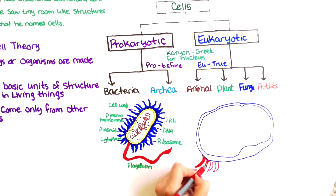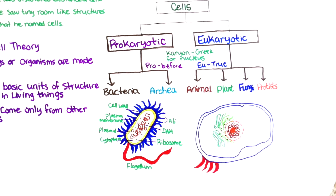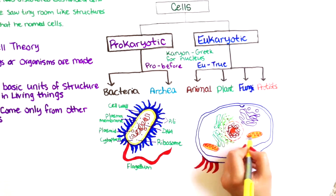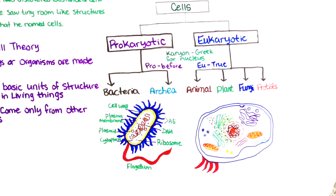Eukaryotic cells, while very similar in function to prokaryotic cells, are much larger and more complex. They are typically characterized by the presence of a prominent nucleus. The eukaryotic cell is much larger than the prokaryotic cell, and this larger size means that there's a lot more space inside the cell.